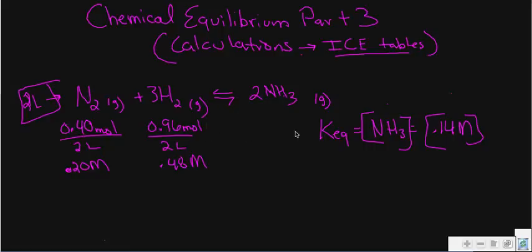In this case, what I've done is I've said my initial concentrations of nitrogen gas were 0.40 moles and my initial concentration of hydrogen gas is 0.96 moles. And I've said that my total volume of my reaction here is 2 liters.